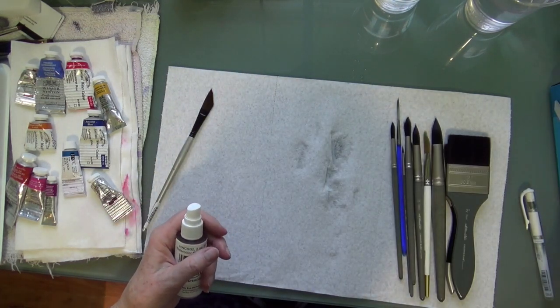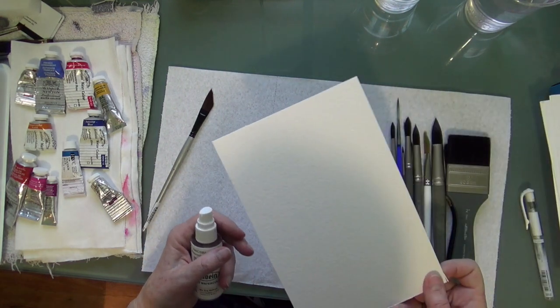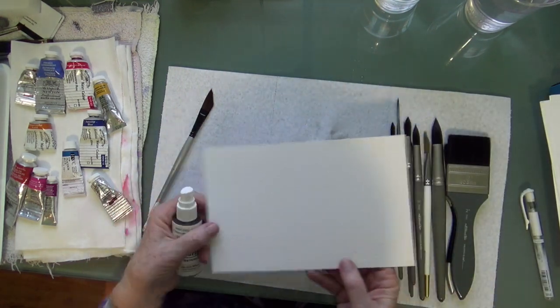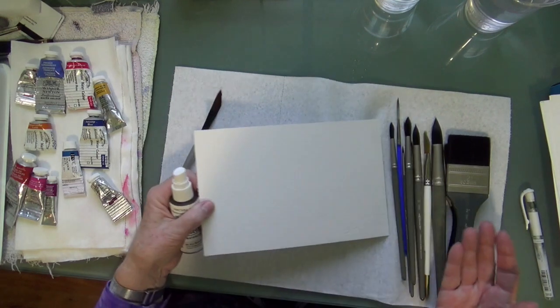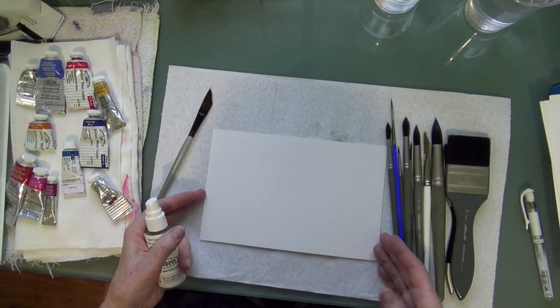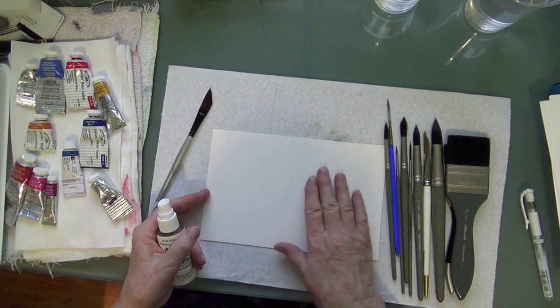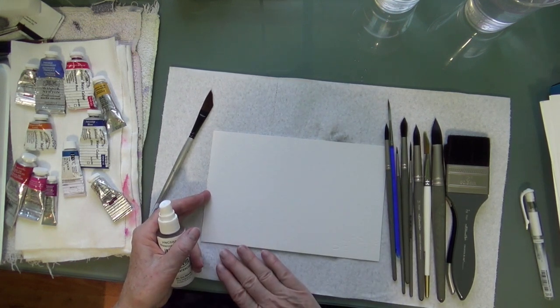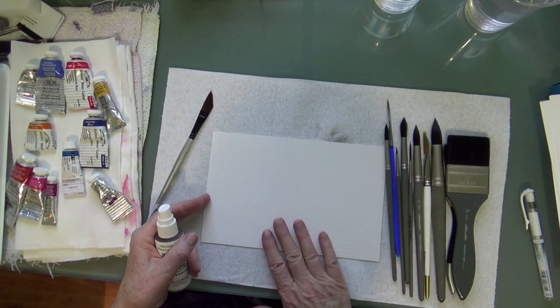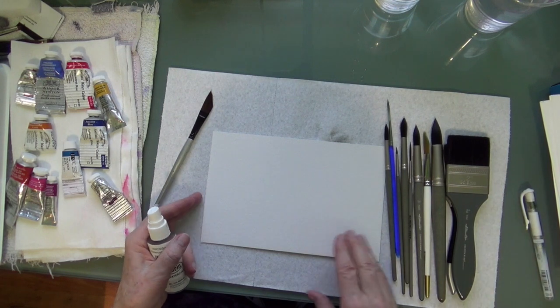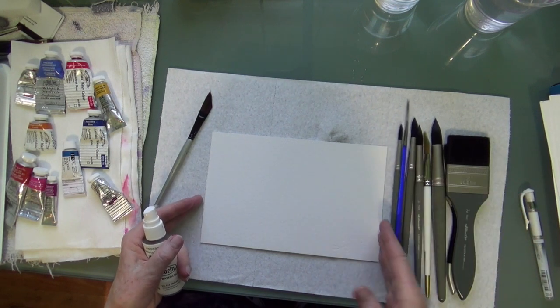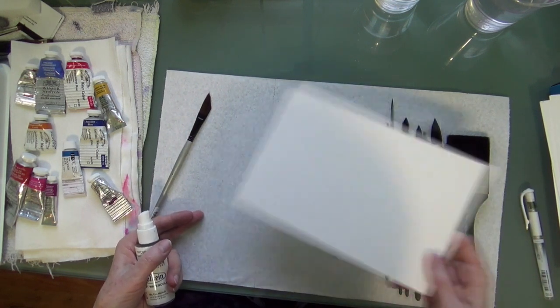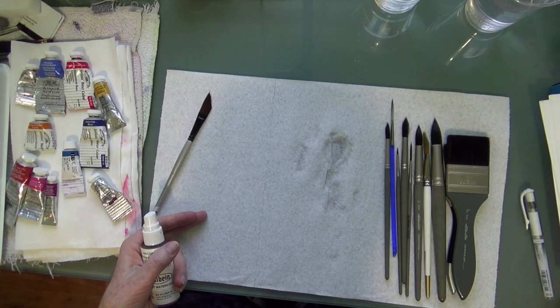So that's not a problem. And I paint a lot on the Arches 300 pound, you can see it's a lot stiffer and that doesn't buckle very much. So I don't have that issue, but it's also more than twice as expensive. So if you're on a budget, don't feel that you have to get 300 pound, 140 pound is fine. I would say if you get something that's a little bit thinner than 140 pound, that's when you start getting into trouble.